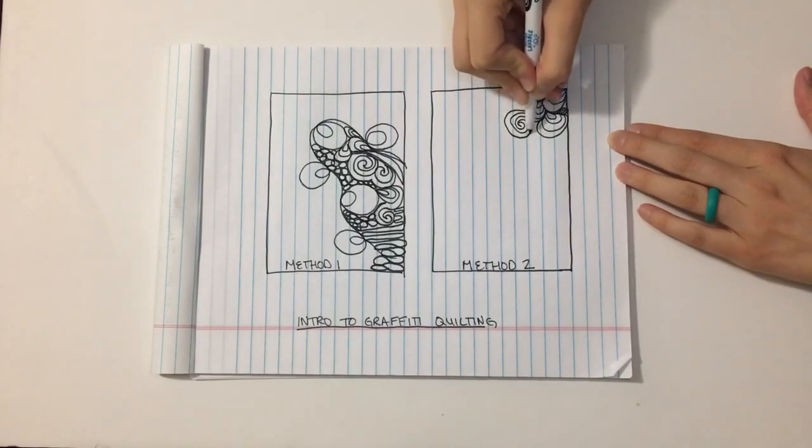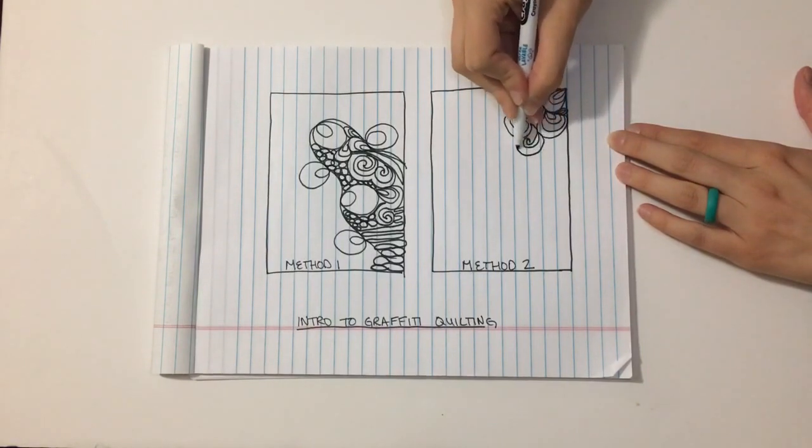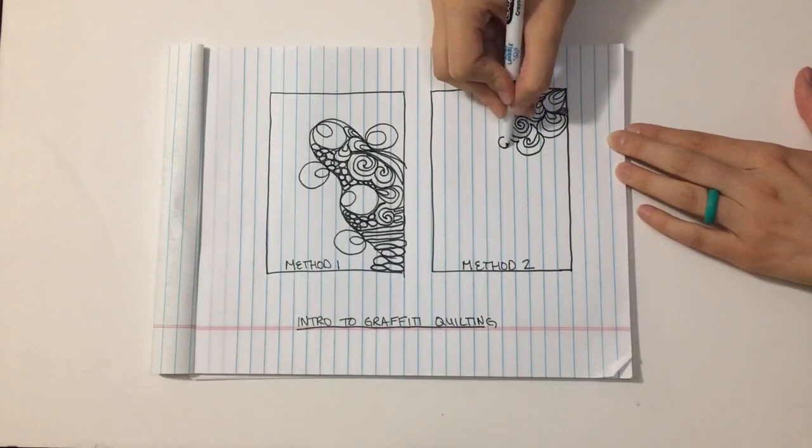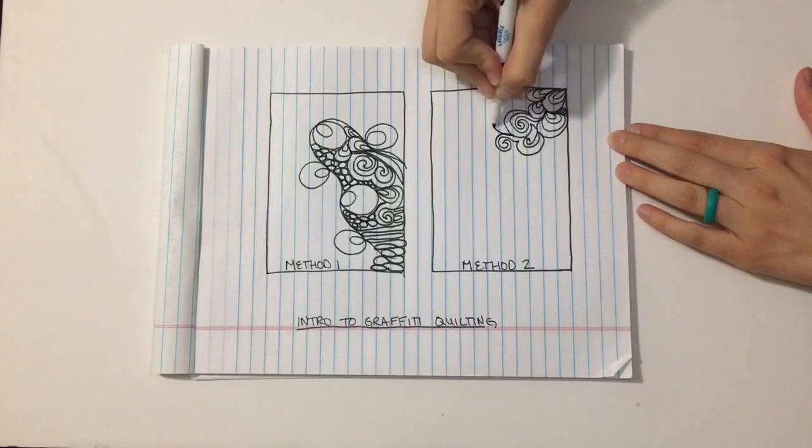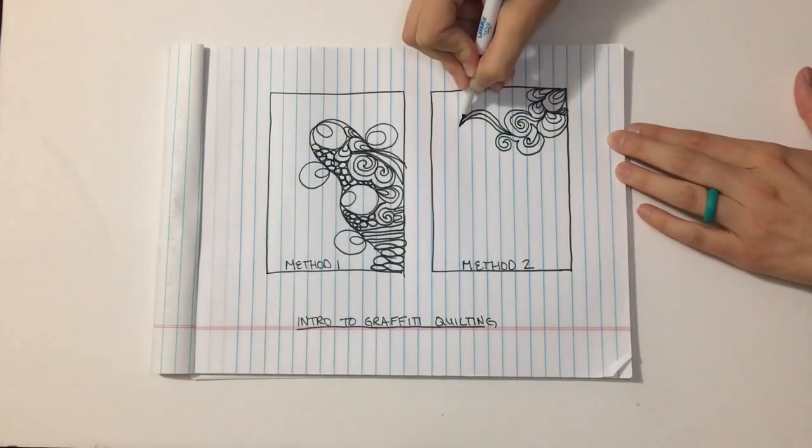And I think that's because I have done more graffiti quilting by creating that double loop structure, and I'm just learning something new. And it's okay that it is moving more slowly. And that's just an area where I need to practice.